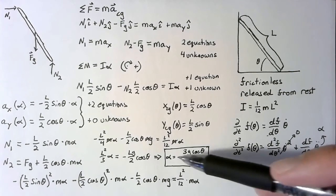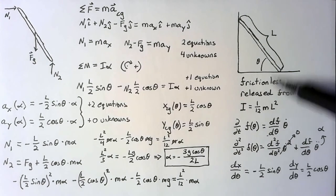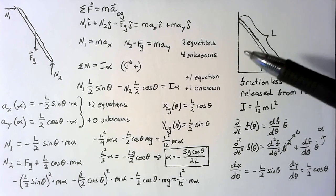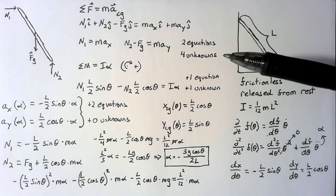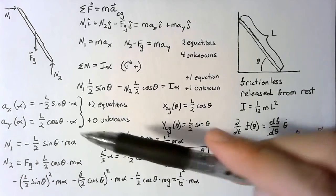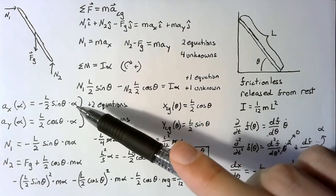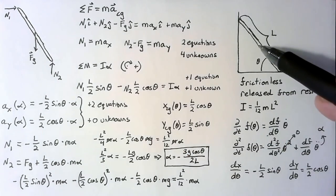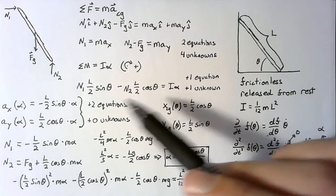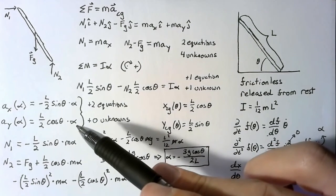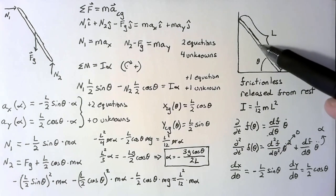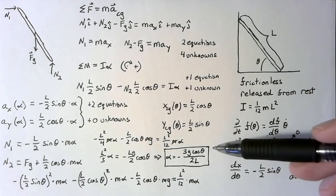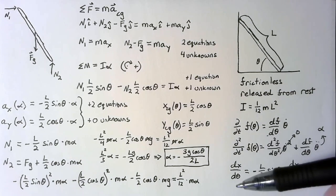The angular acceleration is negative, which means theta is going to start decreasing — exactly what we expect. Plugging back into the x equation, the x acceleration ends up positive, so the center of gravity moves to the right. And the y acceleration is negative, so it moves downward. The solution makes physical sense, and we are good to go.